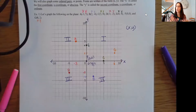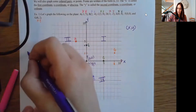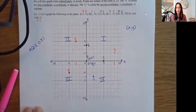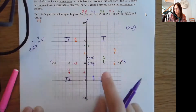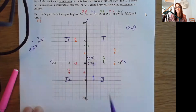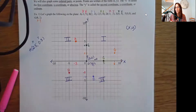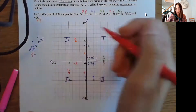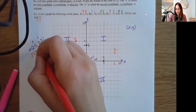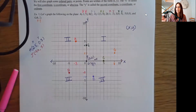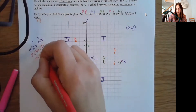You can graph fractions and decimals too, just by estimating. For example, to graph point H at (2.5, 0.3), my x value is halfway between two and three, and my y value of 0.3 is not quite halfway up, so I estimate those positions. When graphing fractions, it may help to convert to a decimal. For instance, if graphing point J at (2/3, 4), I can take out a calculator and do 2 divided by 3 to get 0.6667, giving me a better idea of where to plot it.